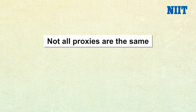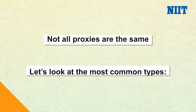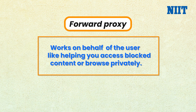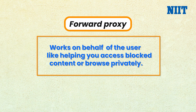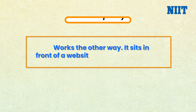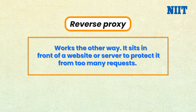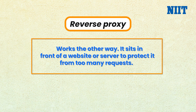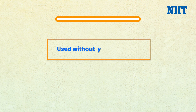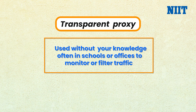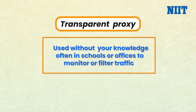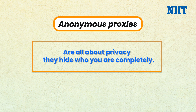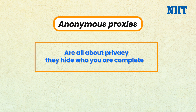Not all proxies are the same. Let's look at the most common types. A forward proxy works on behalf of the user, like helping you access blocked content or browse privately. A reverse proxy works the other way — it sits in front of a website or server to protect it from too many requests. A transparent proxy is used without your knowledge, often in schools or offices to monitor or filter traffic. And anonymous proxies are all about privacy — they hide who you are completely.